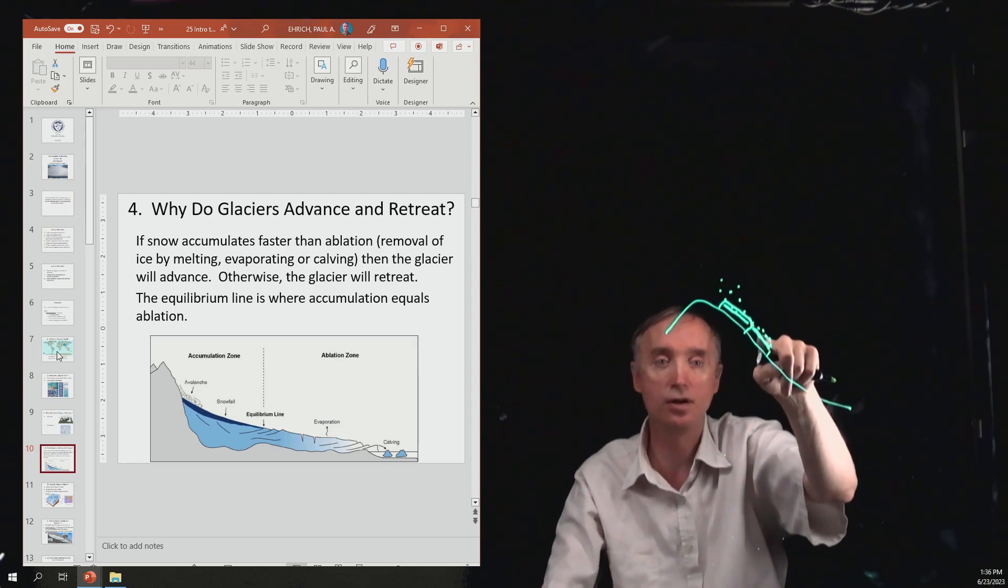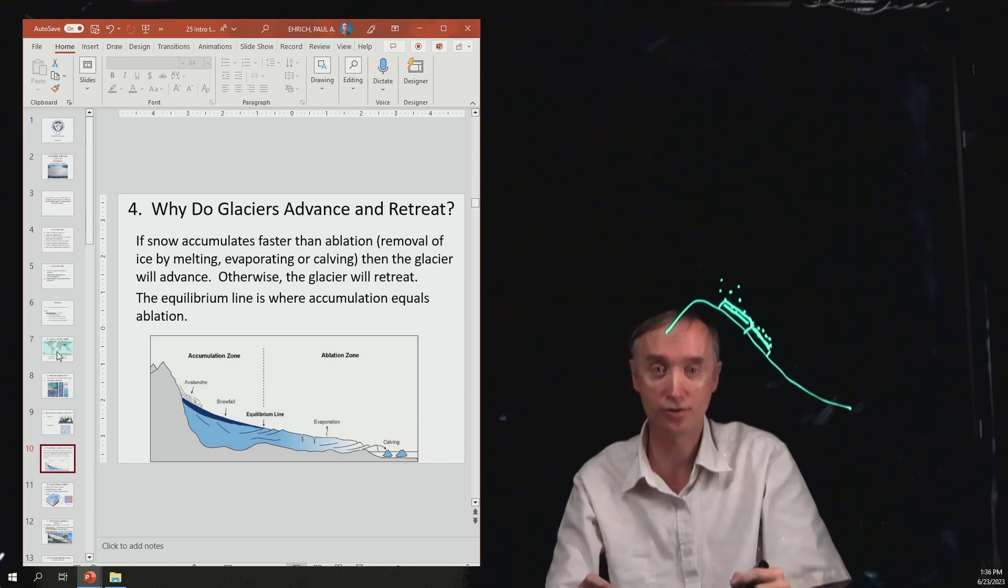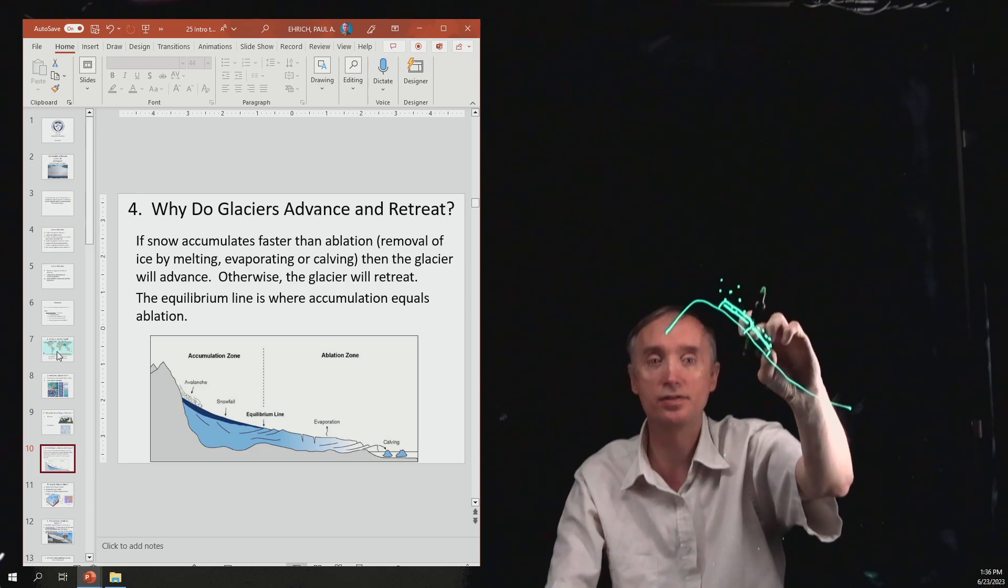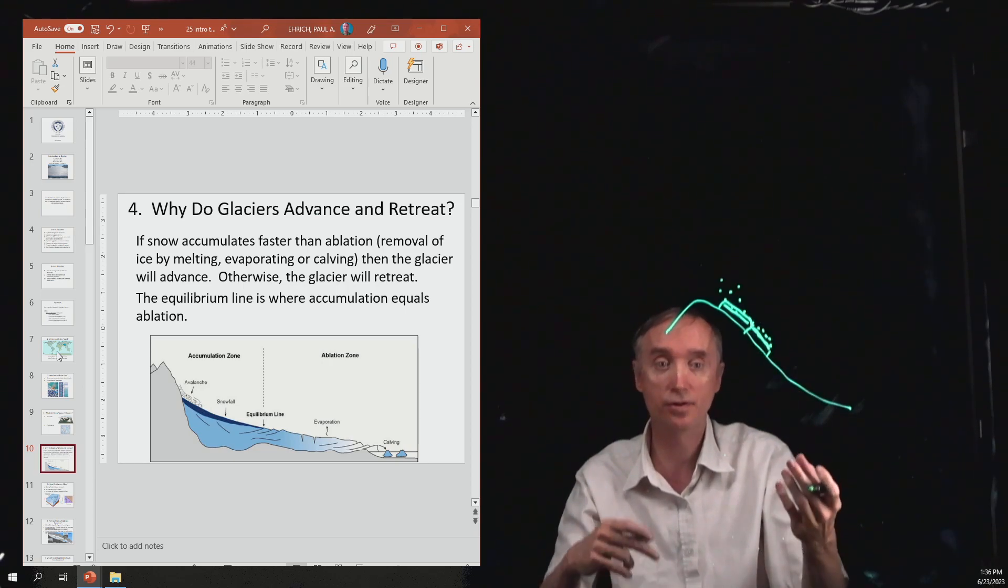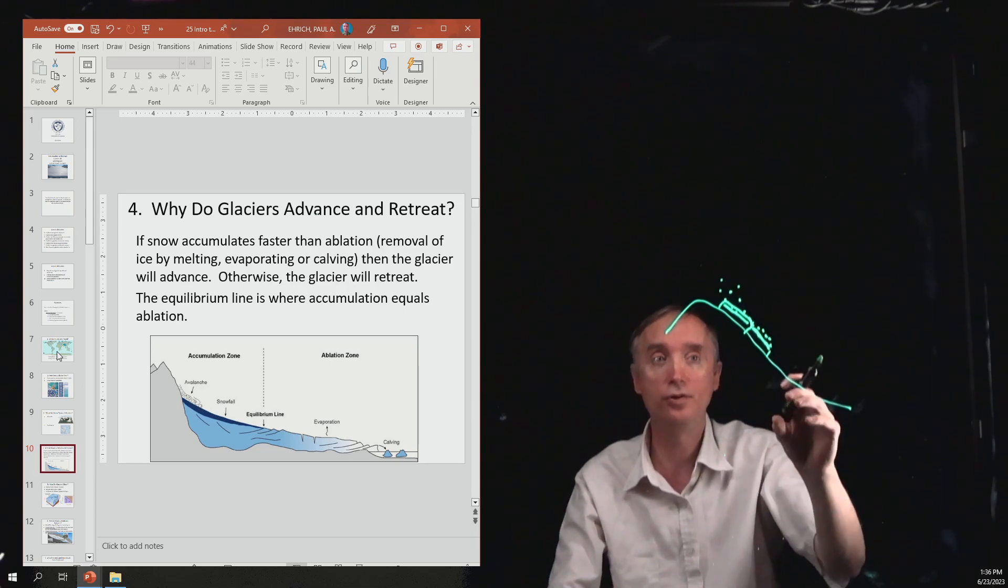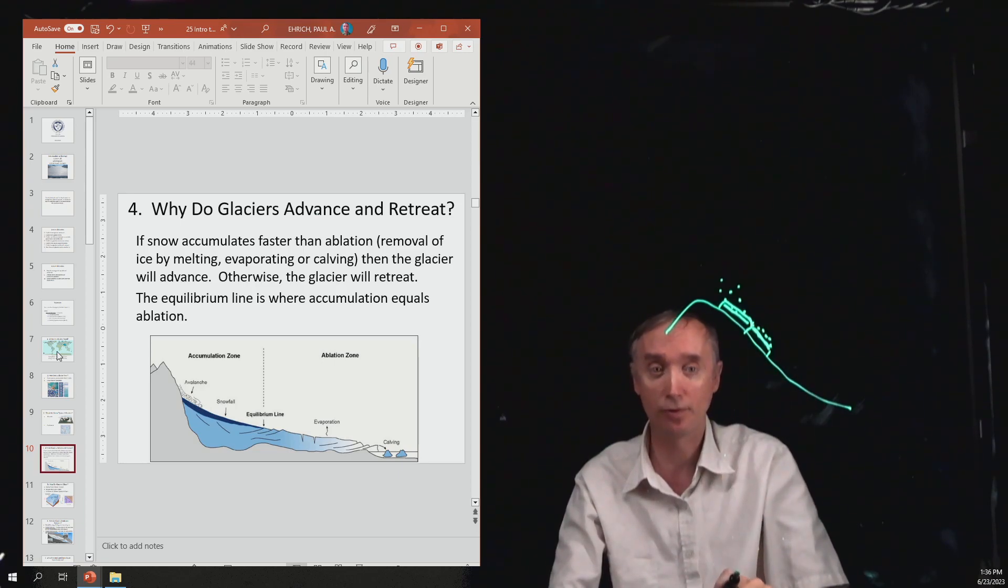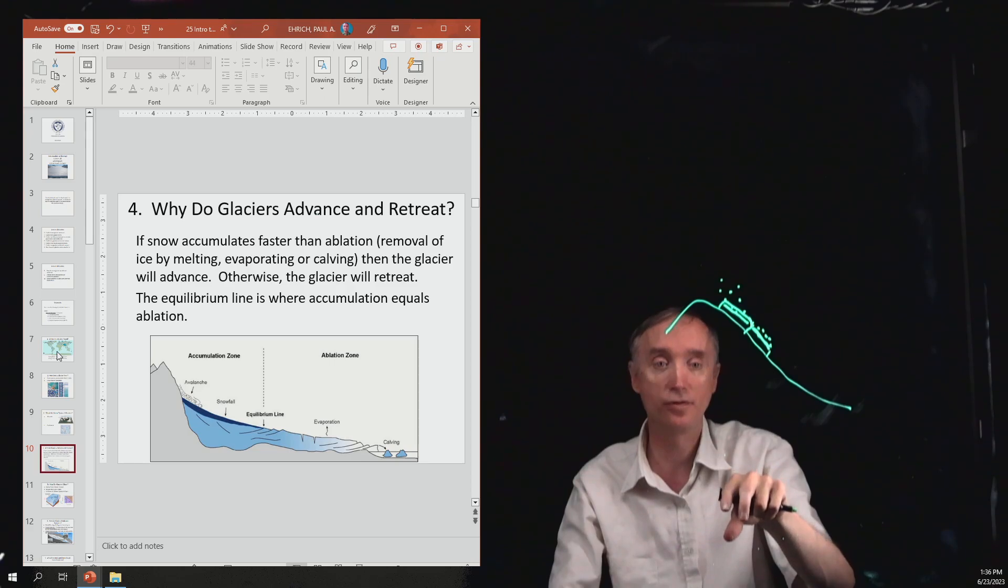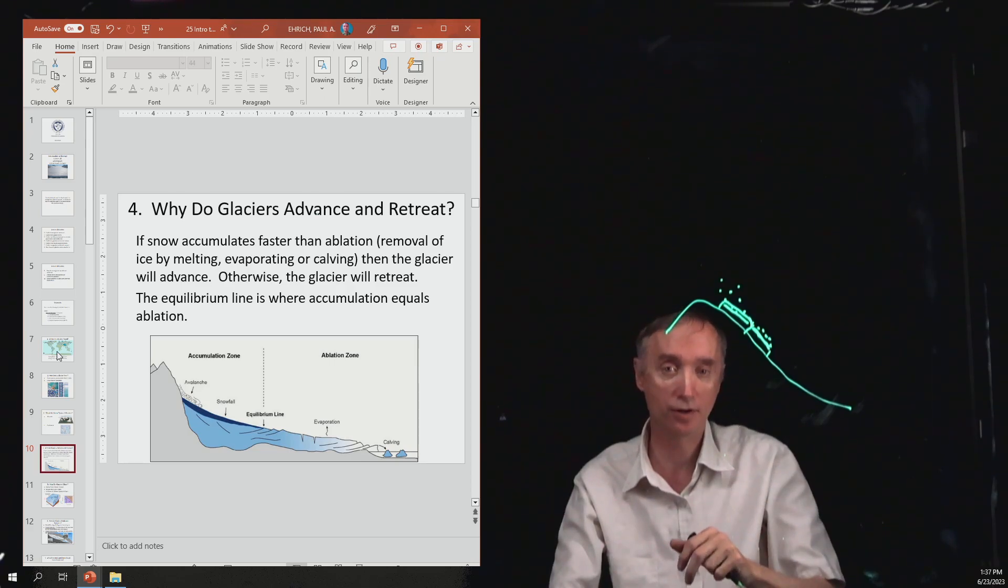Down here this is called the zone of ablation. It could be that the ice is melting, turning into a liquid. It could be that the ice is evaporating. An example of this is in your freezer. You could take ice, put it in the freezer compartment and leave it there for a couple of weeks, and if you look at that ice you'd notice it's a little bit smaller.